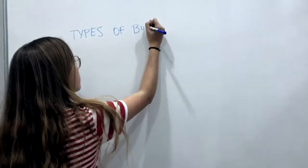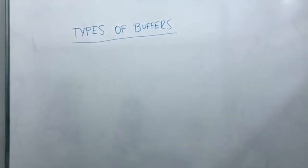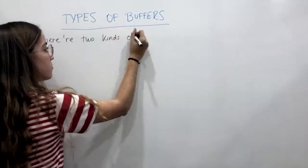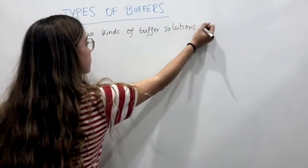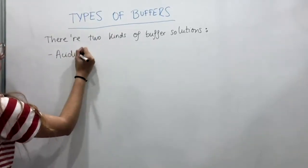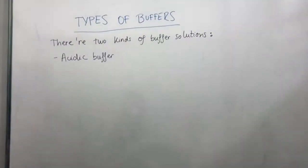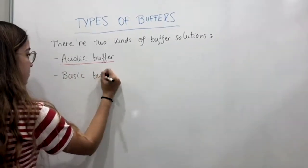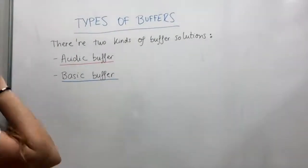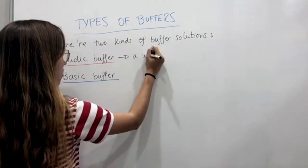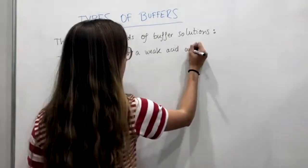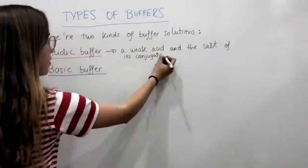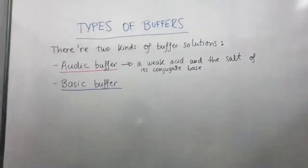Now we are going to see the types of buffers. Imagine we have a container with a weak acid in it and we pour some strong base. Some quantity of the weak acid will transform into its conjugate salt, so the new pH can be regulated depending on the concentration of the strong base added. The same happens with a basic buffer, but instead of regulating a strong base, it regulates a strong acid — meaning a weak base transforms into its salt.